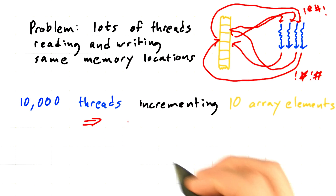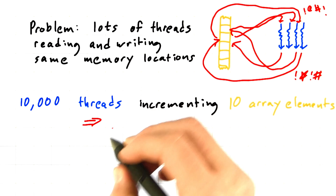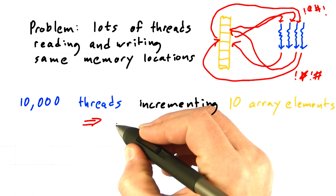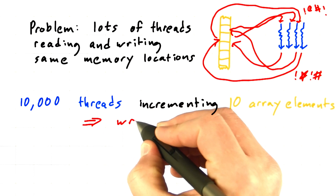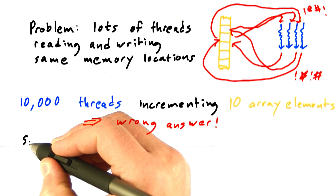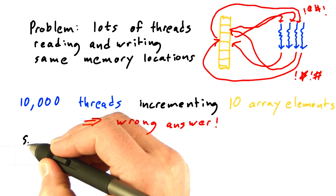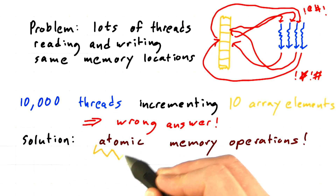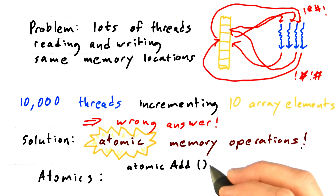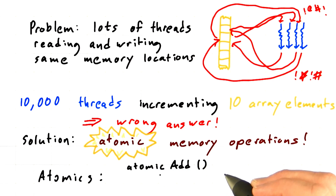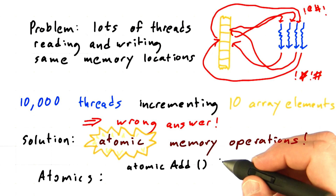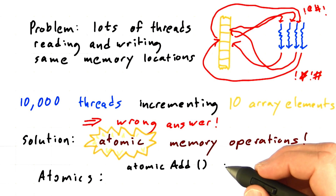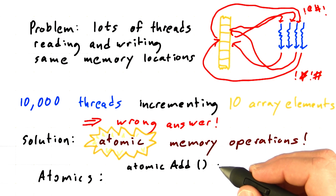By naively having 10,000 threads incrementing 10 array elements, we got the wrong answer. One solution might be to sprinkle barriers throughout the code. But another solution is something called atomic memory operations, which are special instructions that the GPU implements specifically for this problem.